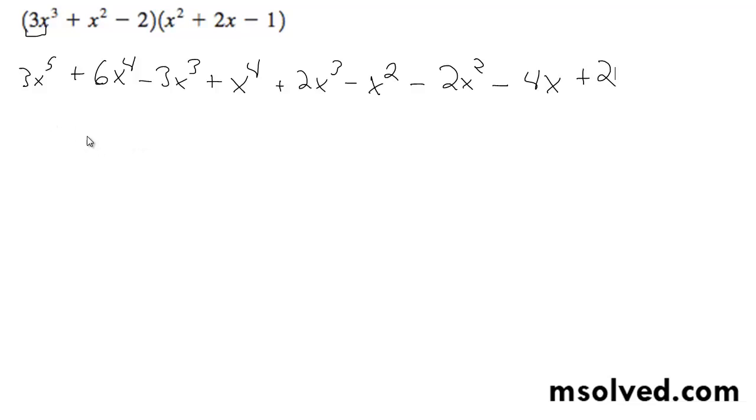So combining like terms, there's no other 3x to the fifth plus, we've got one other to the fourth, so combining these two we get 7x to the fourth, and then for our x cubed we get minus 3 and then plus 2, so we get minus x cubed, and then x squared, we get two of these, so it becomes minus 3x squared, and then minus 4x plus 2.